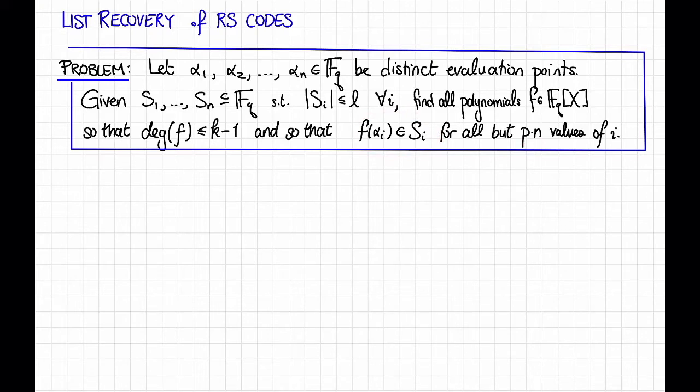If that's true, then the corresponding Reed-Solomon code is p comma little l comma the number of such polynomials list recoverable. Our problem is to do this efficiently. Let's say ideally in time polynomial in n, and notice that that's going to imply that capital L, the number of such polynomials, must also be polynomial in n, because otherwise we wouldn't have time to output them all.